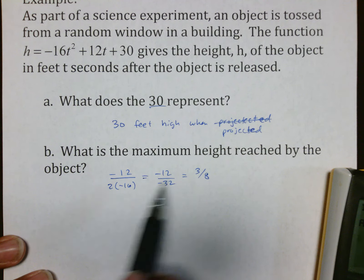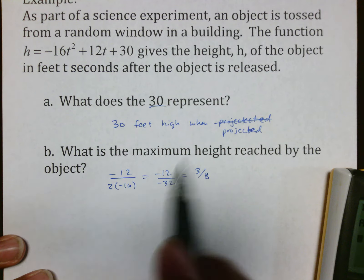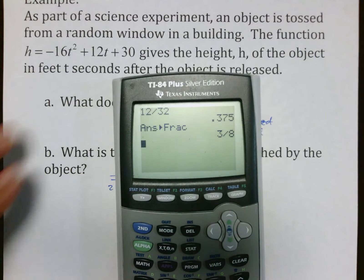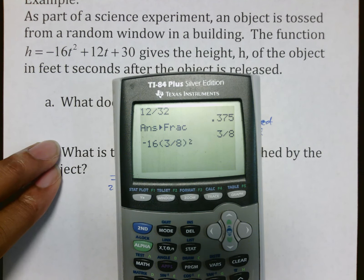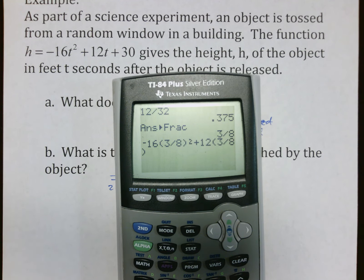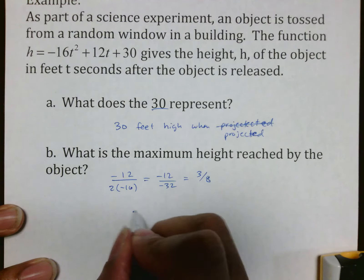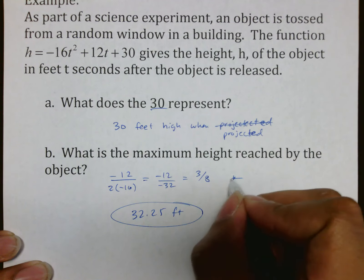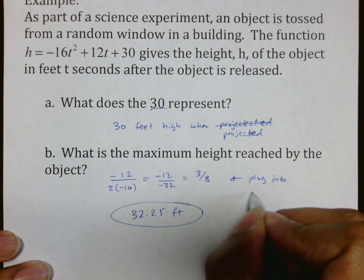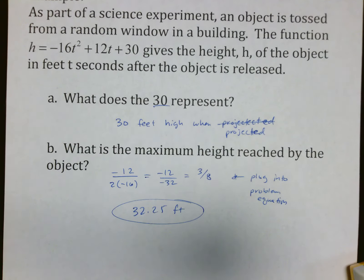That is not my answer. This is how long it takes for you to find it because again t tells me how far across. The h is actually how high it is. So the 3/8 that I just found is the answer that's going to lead me to it so I do my negative 16 times 3/8 squared plus 12 times 3/8 plus 30 and I get the answer of 32.25 feet. Plug that into your problem equation and that will give you your height.